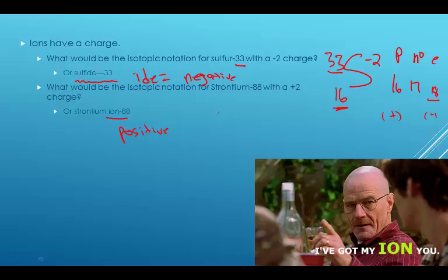What would be the isotopic notation for strontium 88 with a plus 2 charge? Strontium is SR. When you find strontium, you'll see it's 38. If it's dash 88 and has a plus 2 charge, protons 38. Neutrons, 88 minus 38 is 50. And then electrons, if it's plus 2, that means I have more protons than electrons. 36.